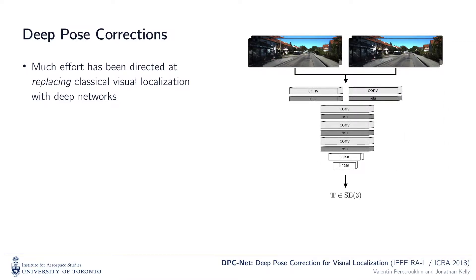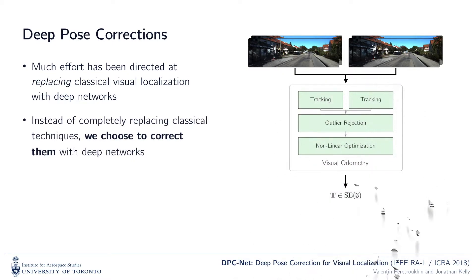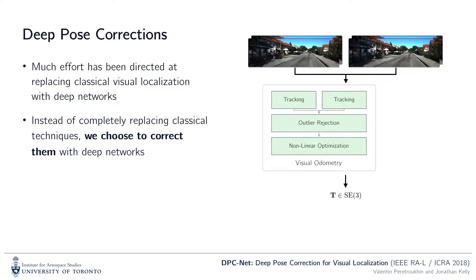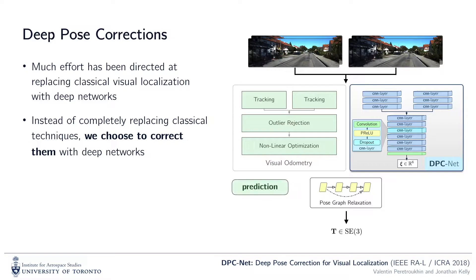Although this is an appealing way to harness the power of deep methods, these approaches force the network to learn appearance changes and projective geometry from scratch. We contend that this is not necessary. Instead, we propose to learn small pose corrections to an existing visual localizer for a particular environment, and then fuse these two outputs for improved localization.